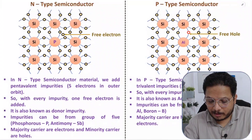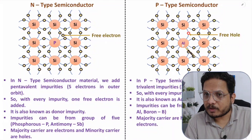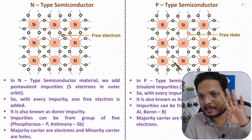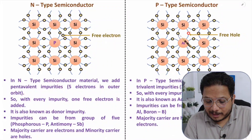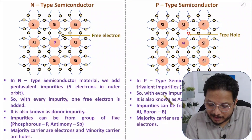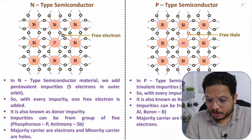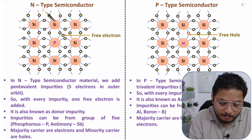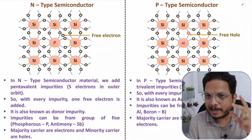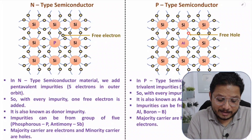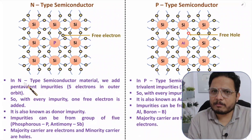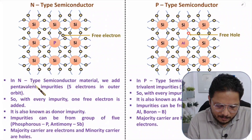In P-type semiconductor material we add trivalent impurities, which have three electrons in the outer orbit. For example, aluminium has three electrons in its outer orbit while silicon has four, so one electron space is vacant — that is referred to as a free hole. By adding trivalent impurities in P-type material you are adding free holes, and in N-type material you are adding free electrons. Adding free charge carriers leads to higher conductivity in extrinsic semiconductor material.